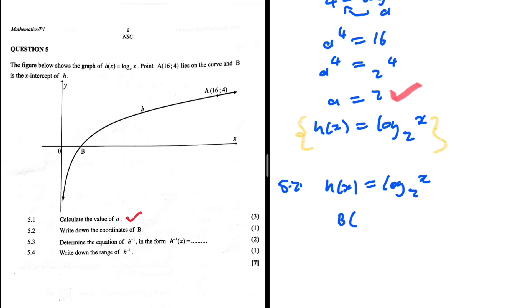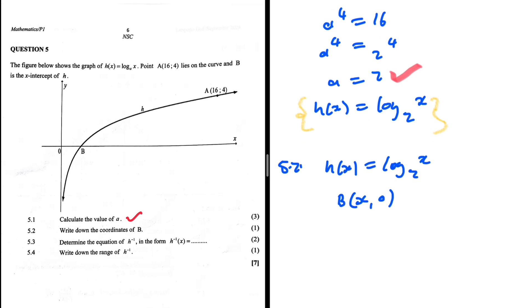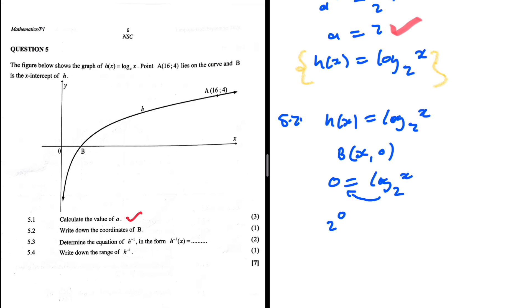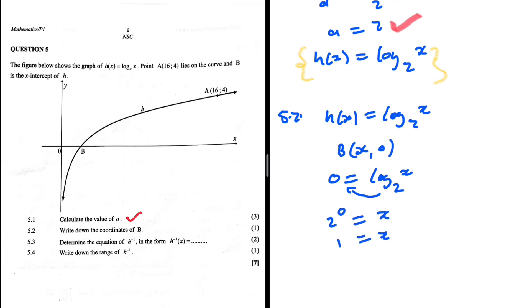For the x-intercept, y = 0. The coordinates of B are (x, 0). Let's substitute to find x. Y is 0, so log_2(x) equals 0. Applying log laws, 2^0 = x, so 1 = x. The coordinates of B are (1, 0).